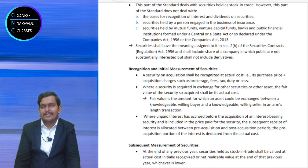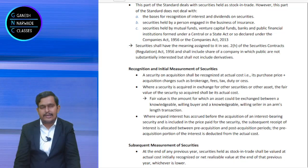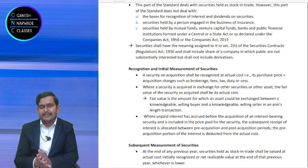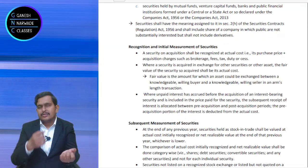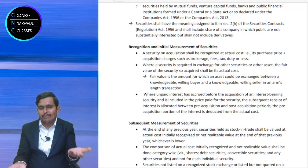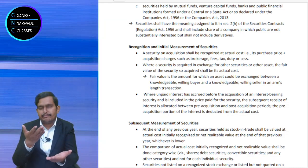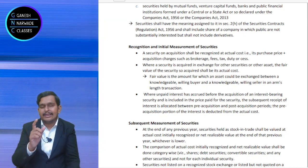Suppose I had some Ruchi Soya shares which were cancelled and I got Patanjali shares — the fair market value of Patanjali shares is what will be considered as my cost. Fair market value is simply the price which a knowledgeable, willing buyer and a knowledgeable, willing seller negotiate. The seller will not sell at less, the buyer will not buy at more, so they arrive at some reasonable price — that is fair market value.